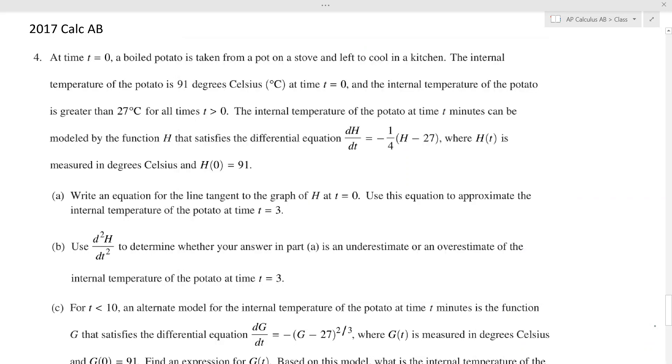So we're going through 2017 Calc AB number four. You always want to read these carefully. It's telling you at time zero we got some potato that has a 91 degree temperature inside. It's left outside to cool. It also says it's always better than 27 degrees Celsius, which means that's the room temperature. The potato is going to cool down to room temperature.